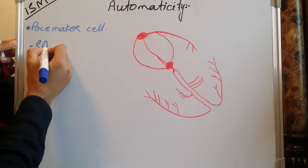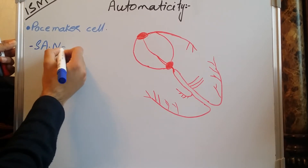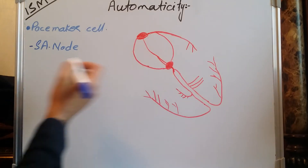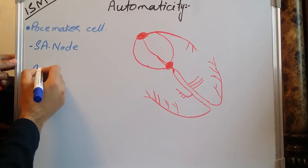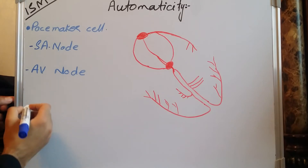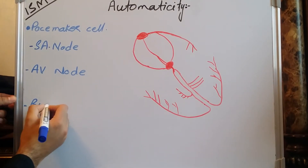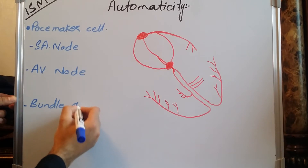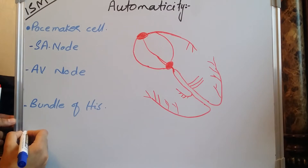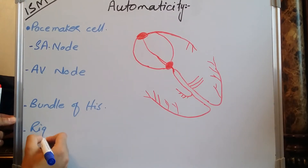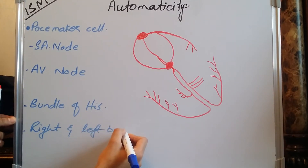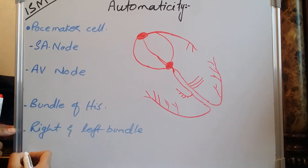From the SA node, the impulse travels via the inter-nodular pathway to the AV node, then after the AV node it rises to the bundle of His, then to the right and left bundle branches, and finally to the Purkinje fibers. This action potential from the sinoatrial node to the apex of the heart causes the contraction of the heart.